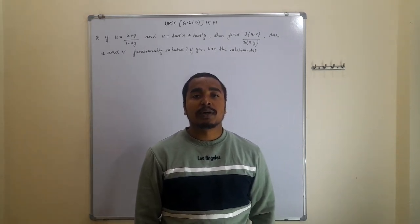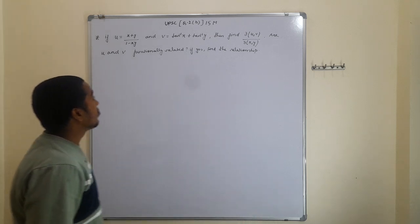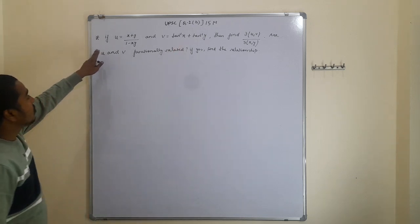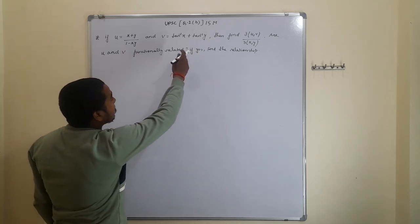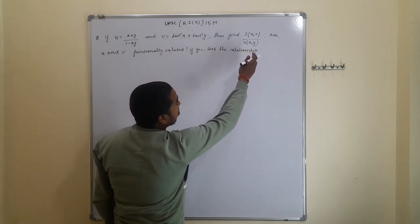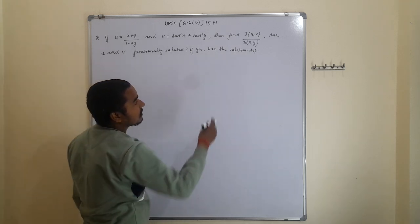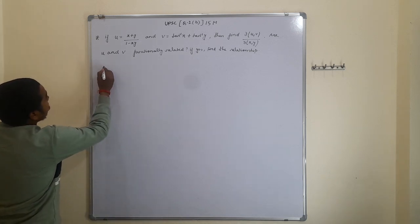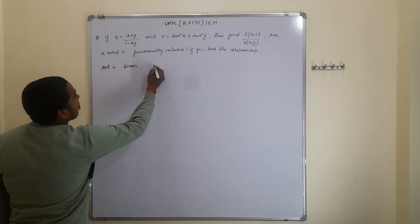Hello everyone. Today we are going to solve a UPSC 2024 question worth 15 marks. The question asks: if u is equal to (x + y) / (1 - xy) and v is equal to tan⁻¹(x) + tan⁻¹(y), then find ∂(u,v)/∂(x,y), and determine if u and v are functionally related. This is a problem based on the Jacobian.